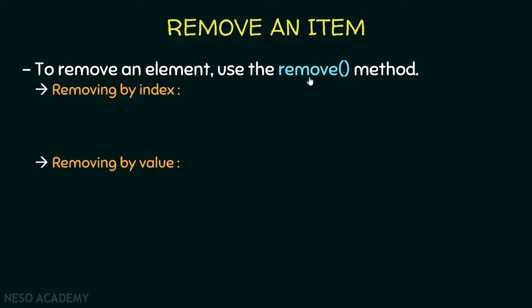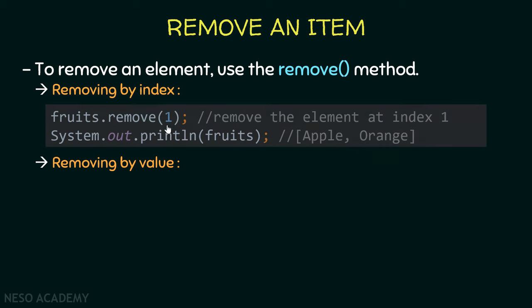To remove an item from the ArrayList, we use the remove() method. We have two options: remove by index or remove by value. To remove the second element, we call remove(1), and the ArrayList is adjusted automatically. After removing, printing the ArrayList confirms the second element is gone.